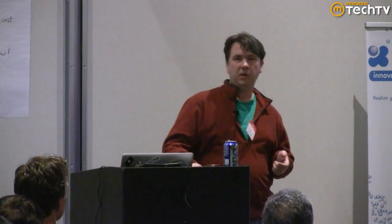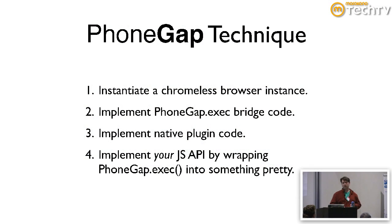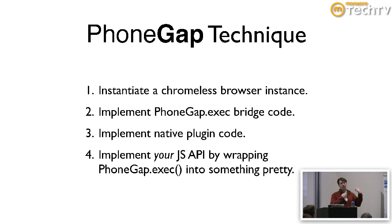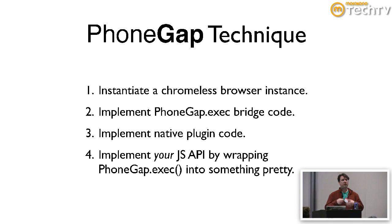I'm going to talk to you about what the PhoneGap technique is. This is the part that's developed in native code — it's virtually the same overall technique on each individual device. All of these devices have some sort of browser component. So we instantiate a Chromeless version of that browser. Then we implement some sort of JavaScript bridge code, a way to transfer data from JavaScript to the native side. And we implement a way for the native side to push data back into the JavaScript side. By keeping the exact same protocol across all the different devices, you can experience reuse of your code on the JavaScript side.